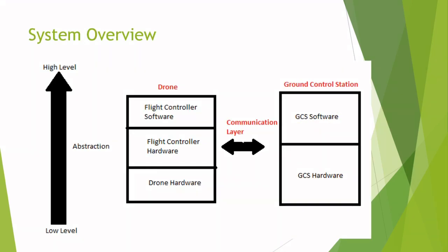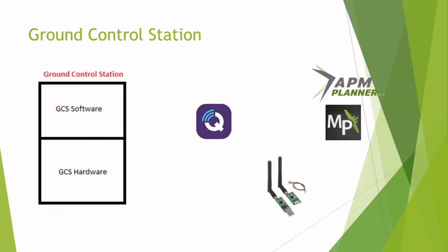On the ground control station side, at the lowest level you always have a computer and a telemetry module. The USB portion goes into your computer, and the UART end connects to your autopilot hardware on the drone side. Once up and running, they communicate at typically 915 MHz in the United States and 433 MHz overseas, using the Mavlink protocol.